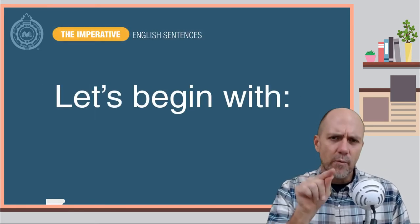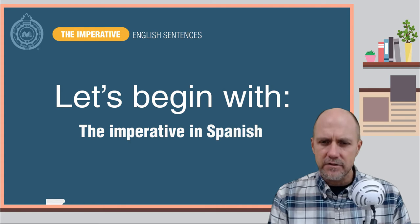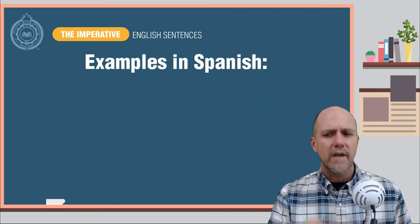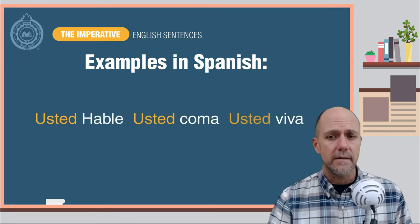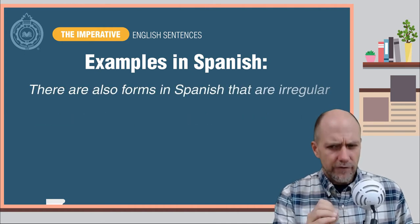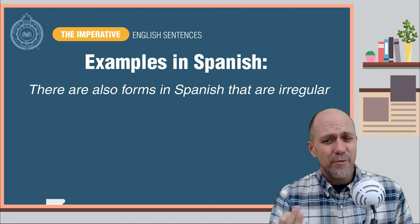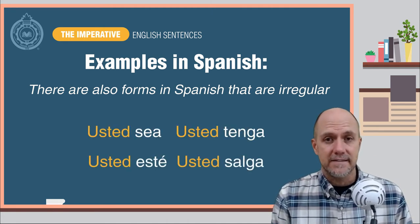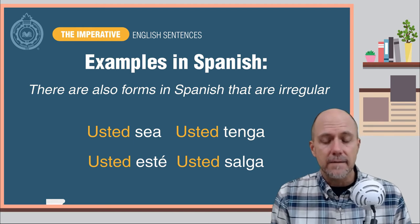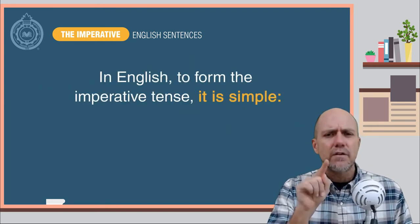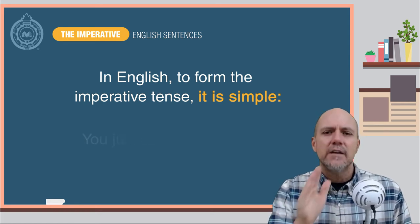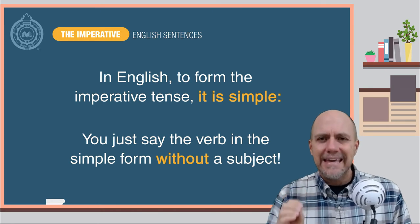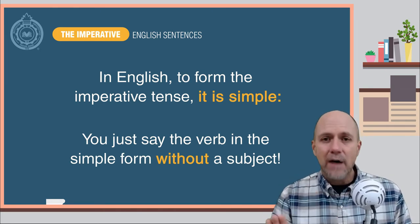Let's begin with what you already know: the imperative in Spanish. In Spanish, the following are examples of the imperative tense. With the subject usted: hable, coma, viva. There are also forms in Spanish that are irregular, like sea, esté, tenga, salga. In English, to form the imperative tense, it is simple. You just say the verb in its simple form without the subject.